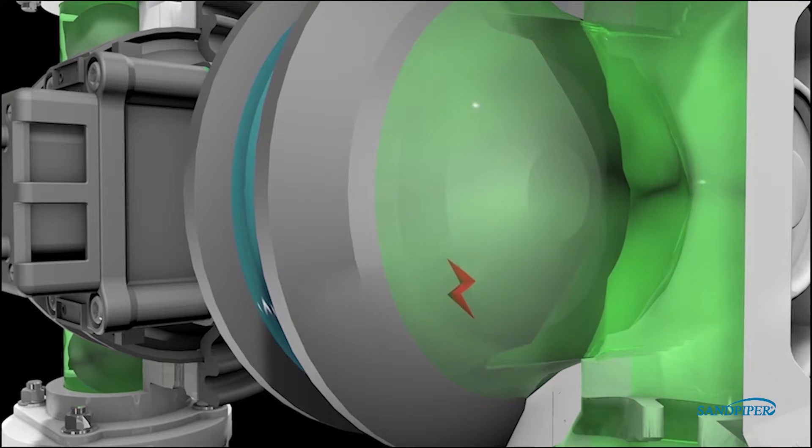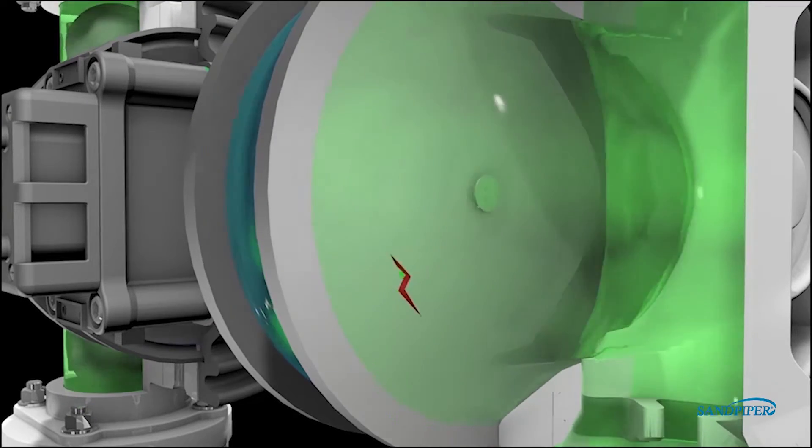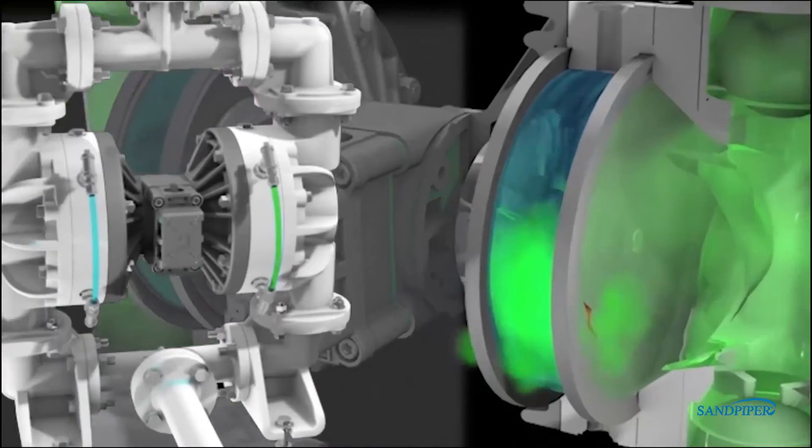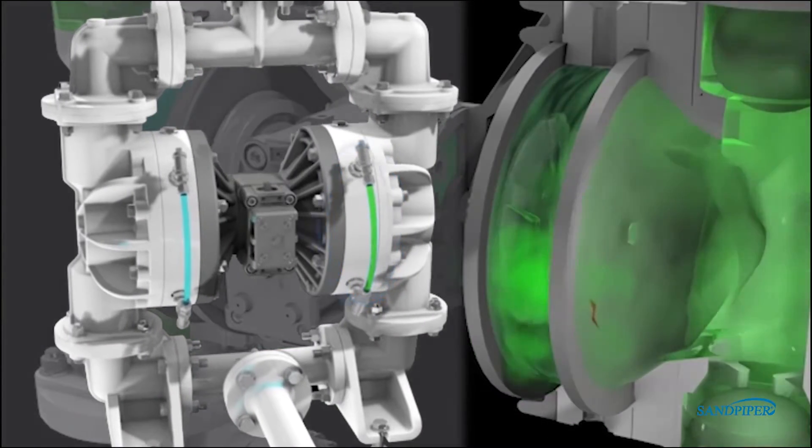In the event of a pumping diaphragm failure, the process fluid will enter the containment chamber causing the fluid to change color. This will alert the operator that the pumping diaphragm has failed and that maintenance is required on the pump.